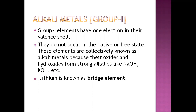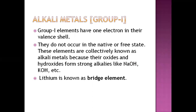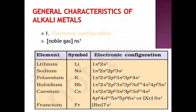The first group is the lithium family. Elements in this group have one electron in their valence shell. They do not occur in the free state. These elements are collectively known as alkali metals because their oxides and hydroxides form strong alkalis like NaOH or KOH — sodium hydroxide or potassium hydroxide. Lithium is known as the bridge element.